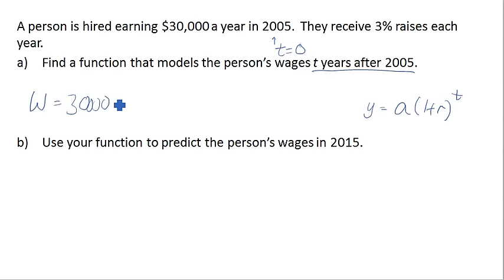So 30,000 times 1 plus the growth rate, so 1 plus our growth rate, and our growth rate here is 3% raised to the t power. t here is years after 2005.